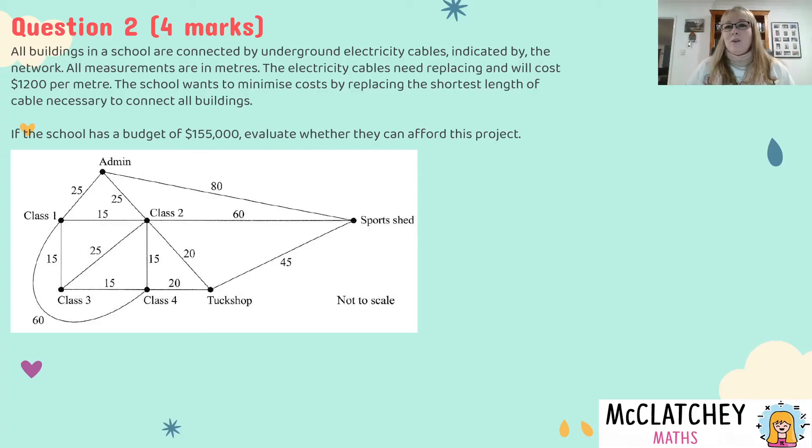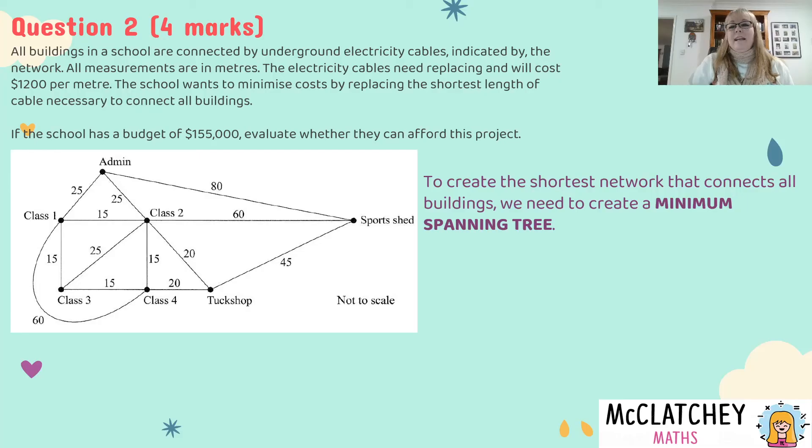The key words in this question are that we want to minimize costs by replacing the shortest length so we're not replacing every network cable in the whole network because you would notice for example that there's lots of lines going all in between different places. For example class two is fed by one two three four five six different electricity cables and really only one needs to go to class two so there's a lot of redundant cables in this network.